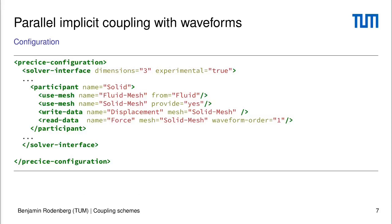Our idea is to use waveforms — if you remember from before, we exchange interpolants between the participants. For this purpose, we extended the configuration file. You now have the possibility to provide a waveform order here to tell PreSize which order the interpolant should have. Another important thing is you have to set experimental equals true to tell PreSize that this experimental API is used.